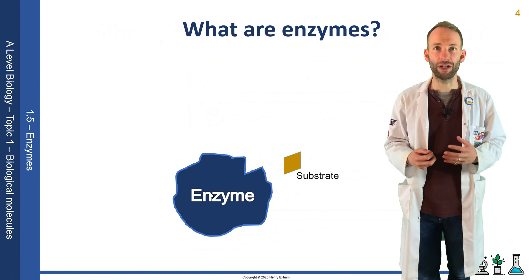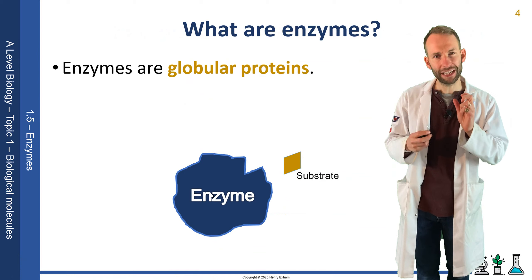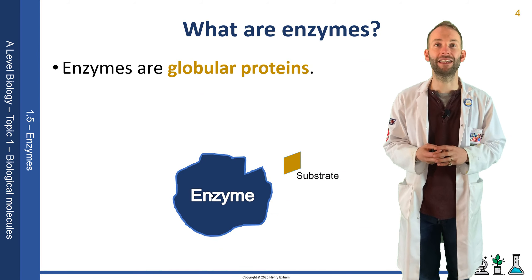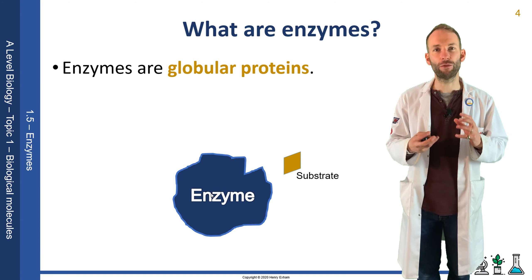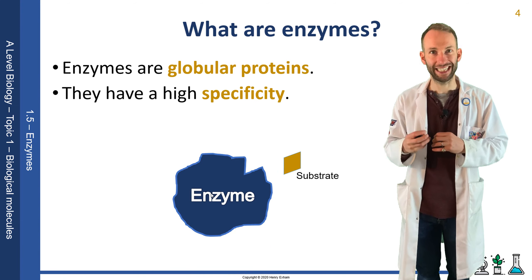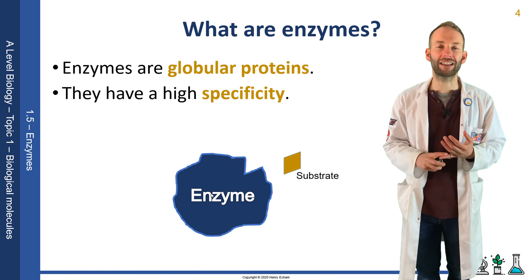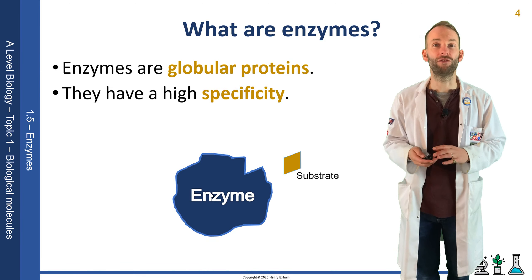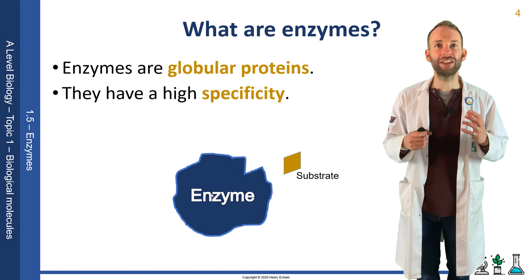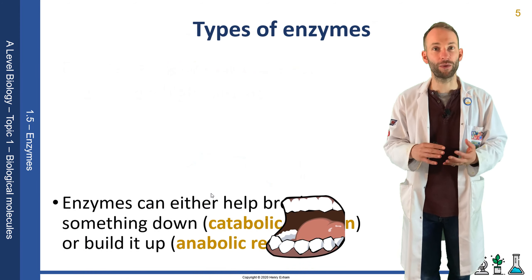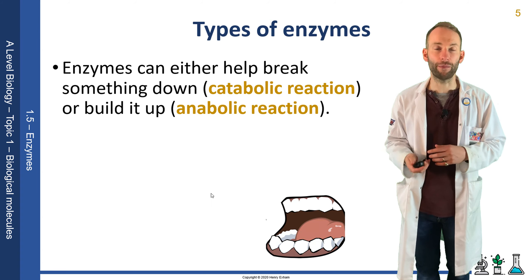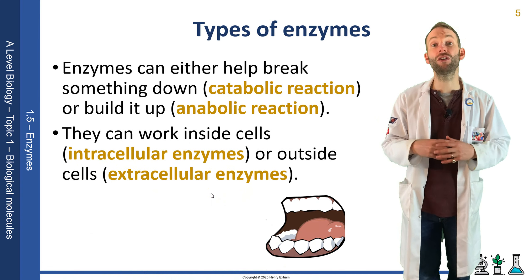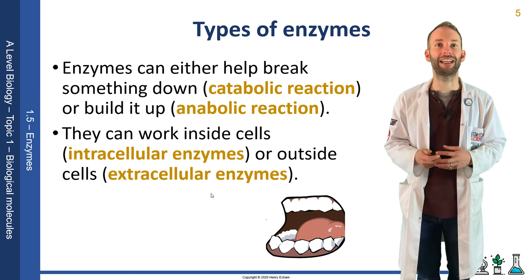Enzymes are globular proteins. They have very specific shapes because of the bonding involved, and because of this they have what we call a high specificity. This means they usually only catalyse one specific reaction — one enzyme for one reaction. Enzymes can either break something down in catabolic reactions, or build something up in anabolic reactions. They can work inside cells as intracellular enzymes, or outside cells as extracellular enzymes.